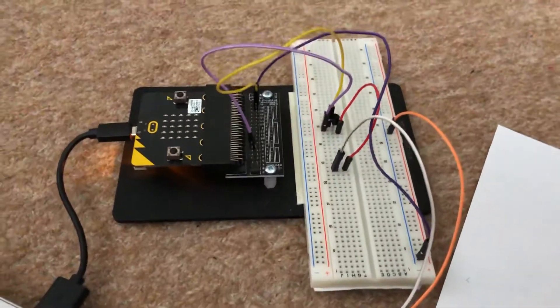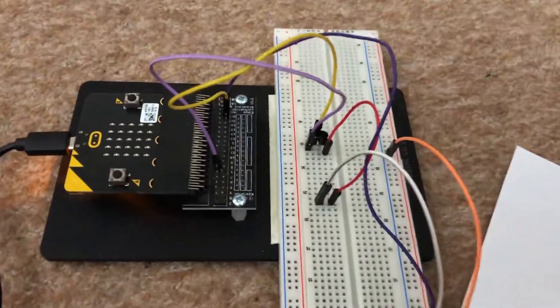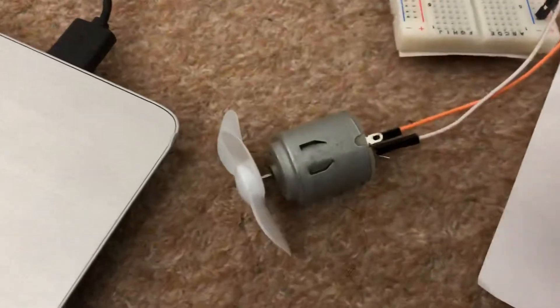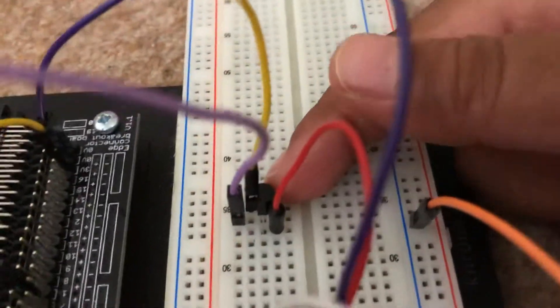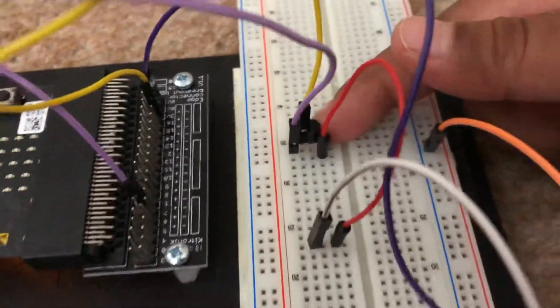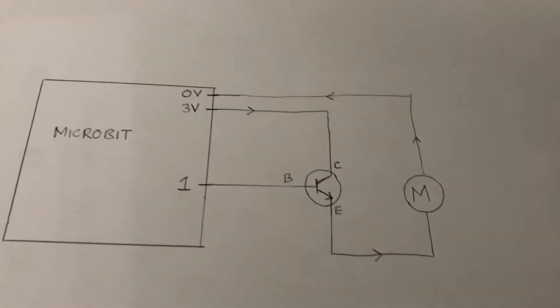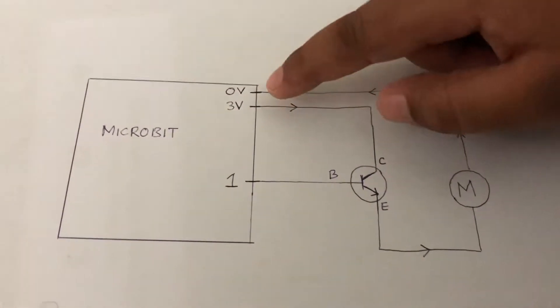Hello, today I'm going to show you how to control a DC motor with a micro:bit using a transistor, which you can see over here. Let me explain it with this circuit diagram.